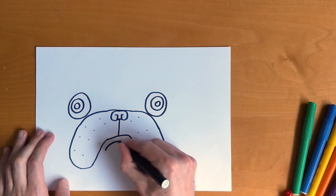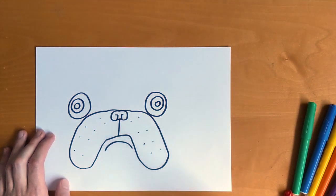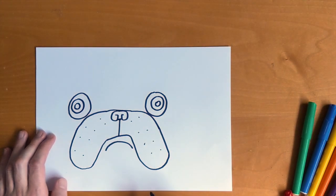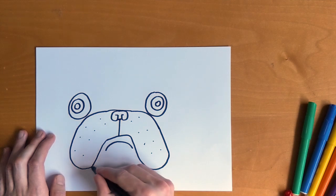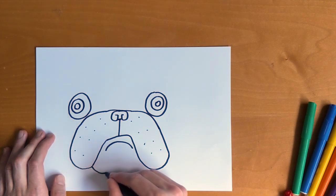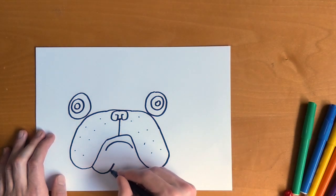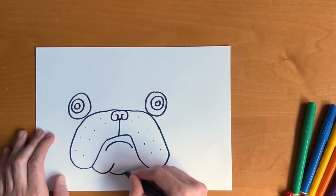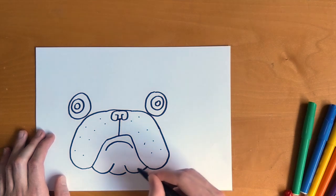Now Pig the Pug looks a bit grumpy, so we're going to do a little frown for his mouth. And now we're going to do a curved line that goes up, another curved line that doesn't go up, and a final curved line that does go up. That's his wrinkly mouth.